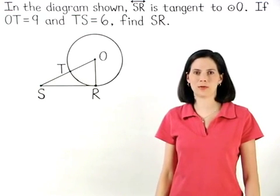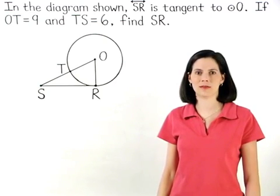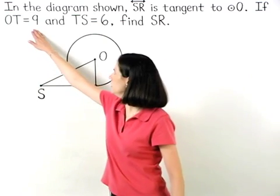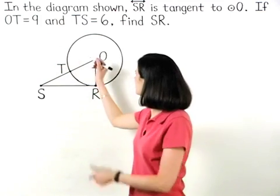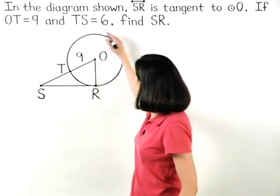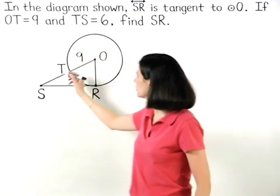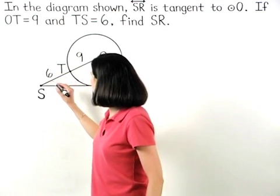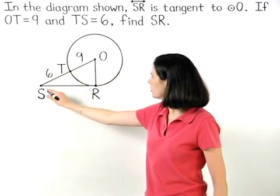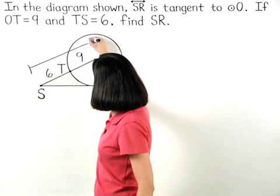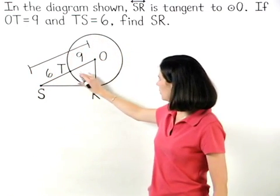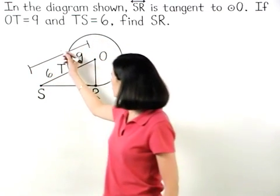Our first step in this problem is to label the diagram. We know that OT equals 9 and TS equals 6, therefore OS equals 9 plus 6, or 15.